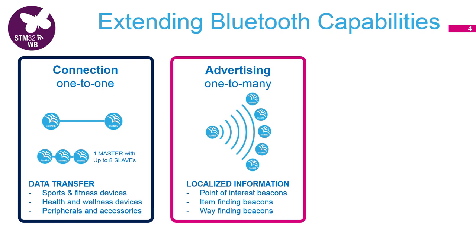The second topology of BLE is advertising, which means broadcasting some data periodically to anyone who listens. Some devices can support only advertising — this would be the use case for a beacon, a device that periodically broadcasts some simple piece of information such as a web page link. For example, when you're at a museum, your phone can read additional information about the items.